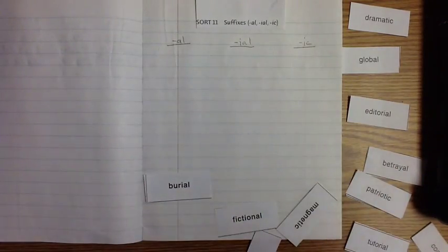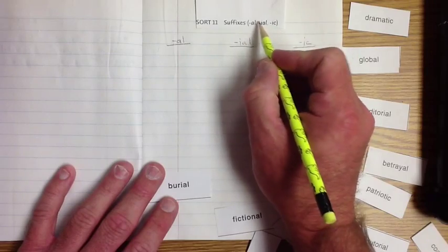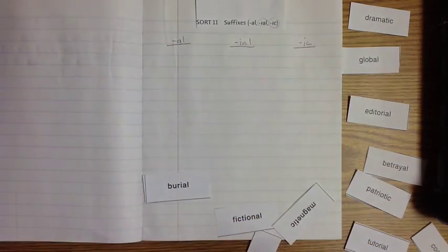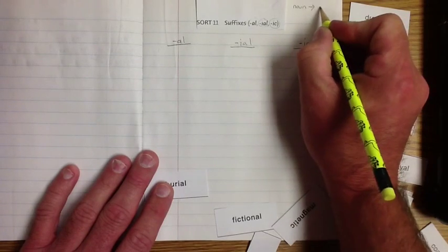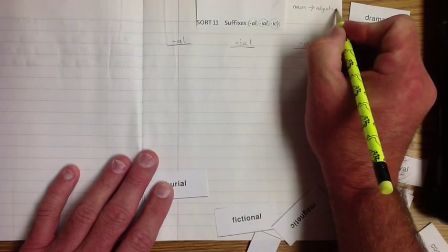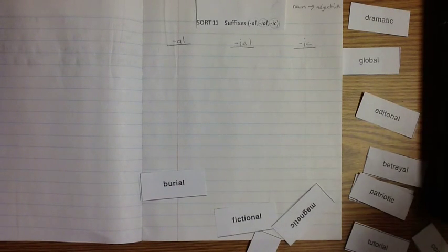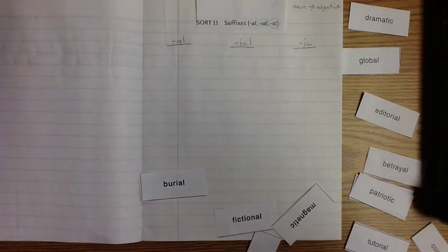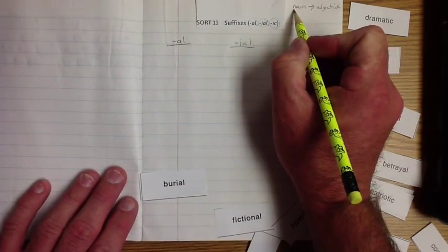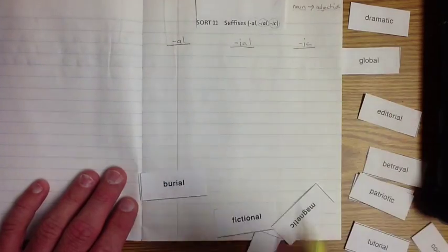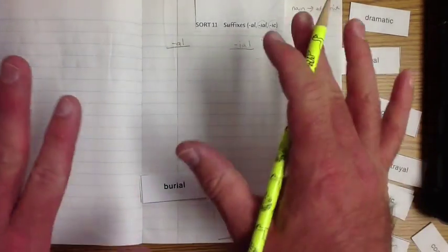Let's get started on our sort here. We've got our suffixes. Dash means there's a root word in front of it. When we add these to the end of words, they're going to take them from a noun and make them an adjective. What is an adjective? It's actually an attribute. It relates to it, modifies it, describes a noun.